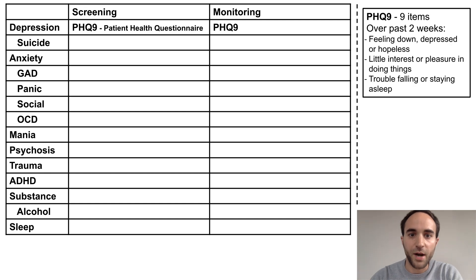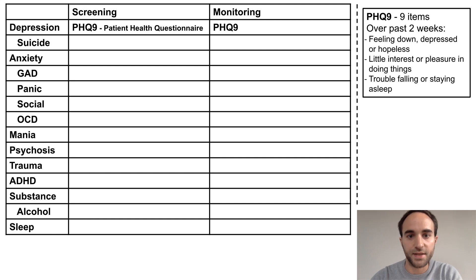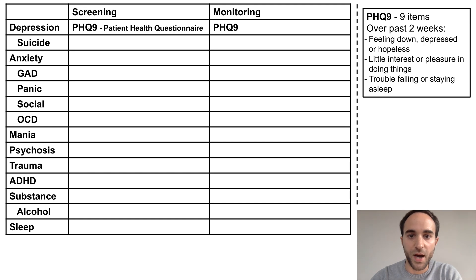For depression, the PHQ-9 includes nine items to screen for major depressive symptoms, including anhedonia, depressed mood, and sleep problems. It is brief and ideal for screening, and can also be used to monitor depression symptoms over time.